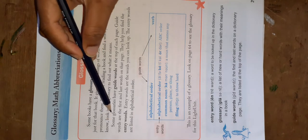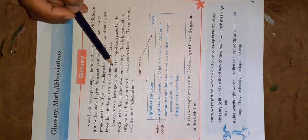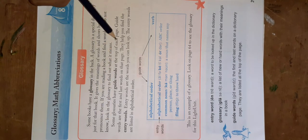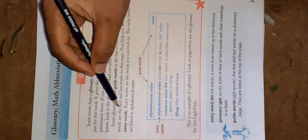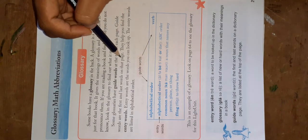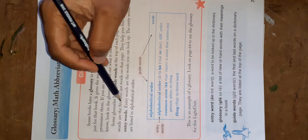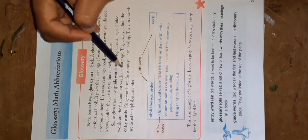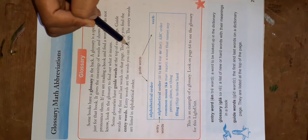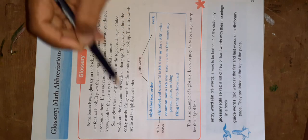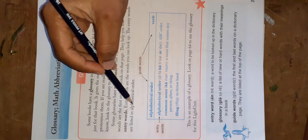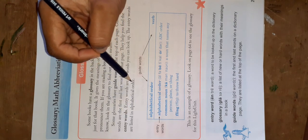Some glossaries have guide words at the top of each page. Guide words are the first and last words on that page. They help you find the entry words. Entry words are the words you can look up, and they are listed in alphabetical order.